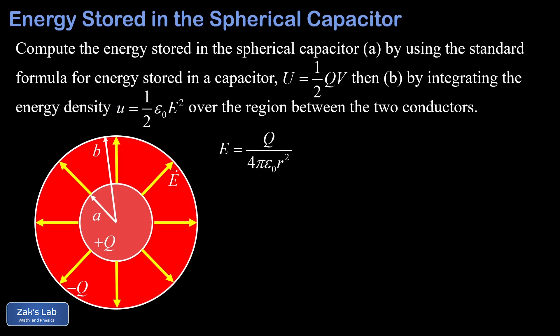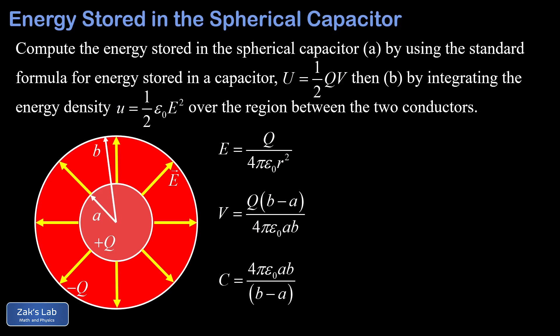In the second video we found the potential difference between the two shells, which turned out to be V = Q(b − a) / (4πε₀ab). We used that to quickly find the capacitance of the spherical capacitor, which turned out to be C = 4πε₀ab / (b − a). Links to both previous videos are posted at the top.